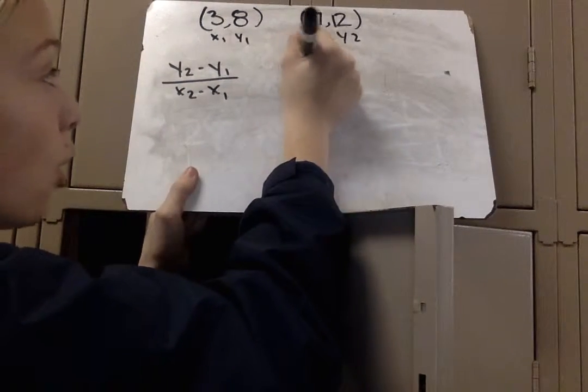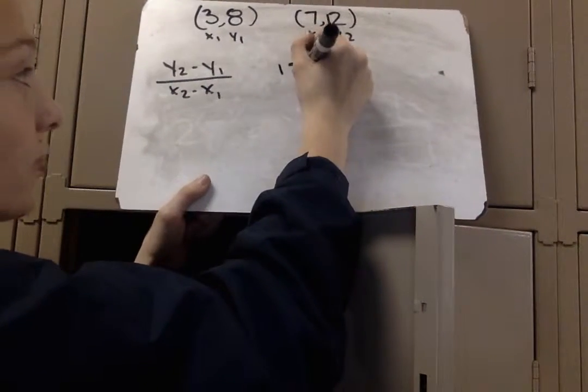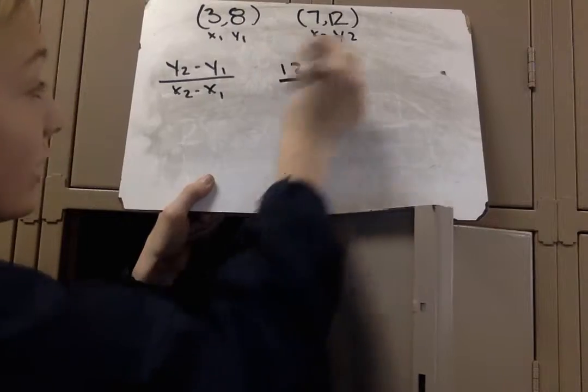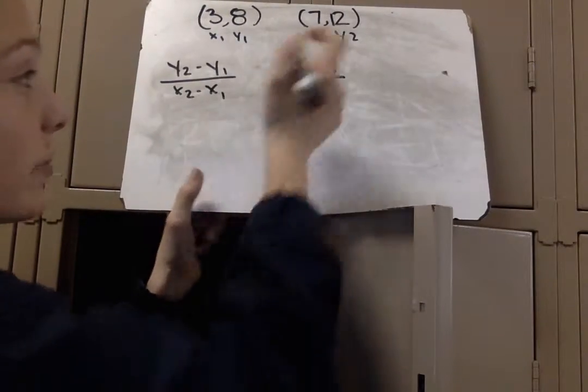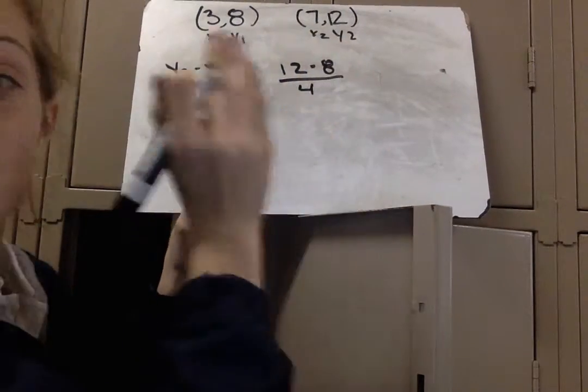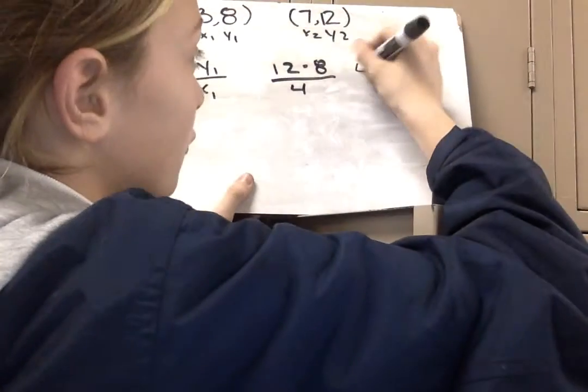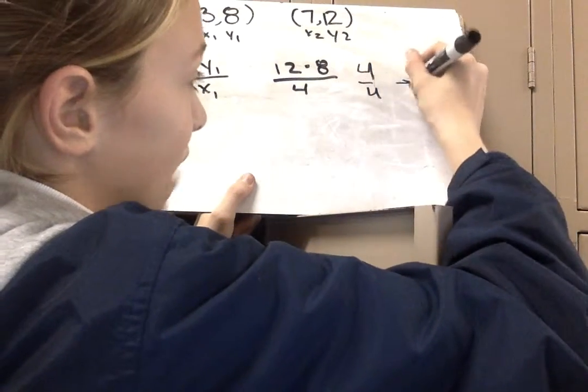So, y2 is 12, and y1 is 8. So, 12 minus 8 over x2 minus x1, 7 minus 3 is 4, and that is equivalent to 4 over 4, which can be simplified to 1.